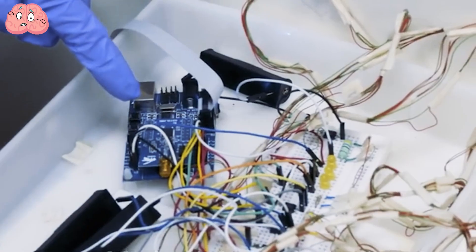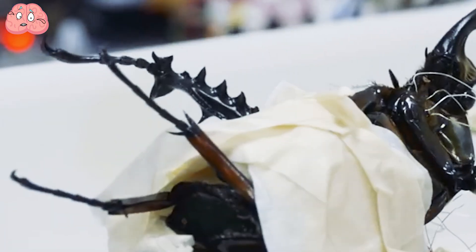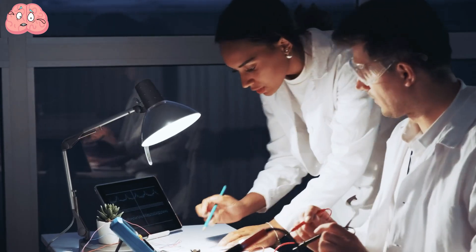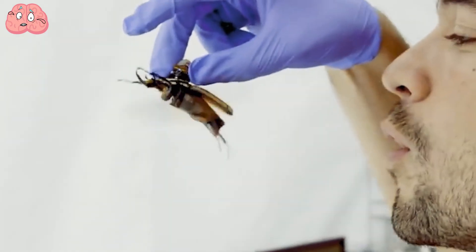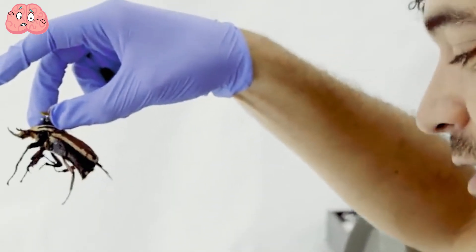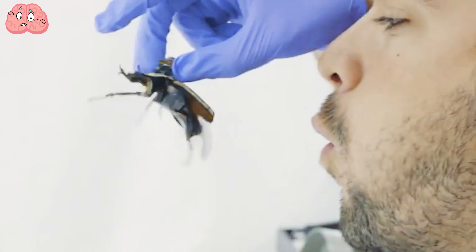By sending electric signals to the beetle, scientists can make it rise, fall, and move in specific directions. Tests conducted in a controlled laboratory environment have shown that these cyborg beetles can be guided left and right and even turned around.